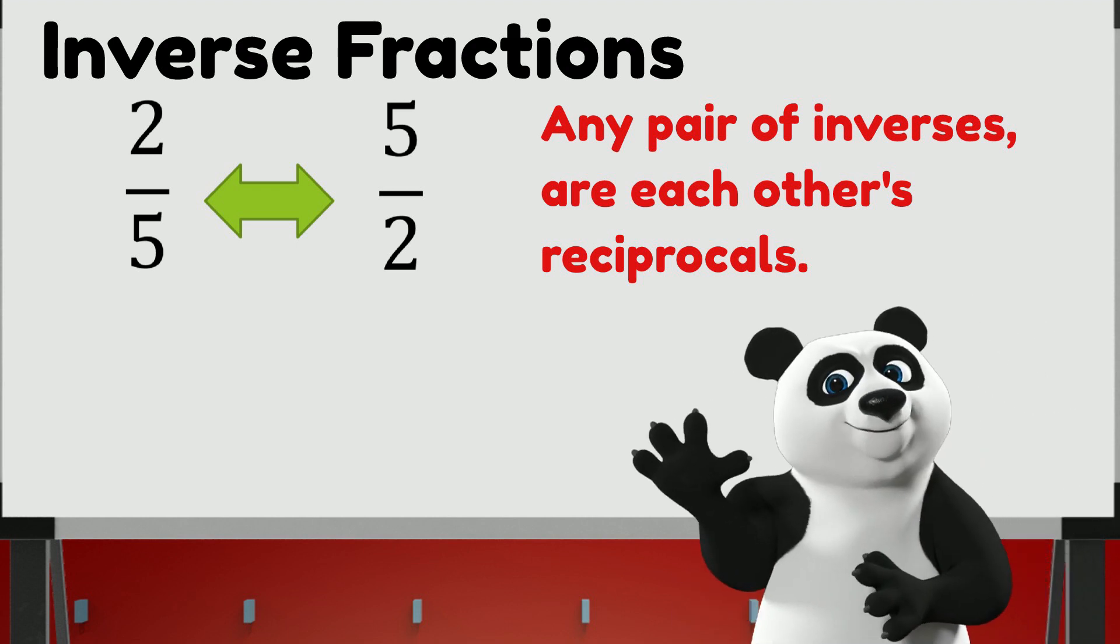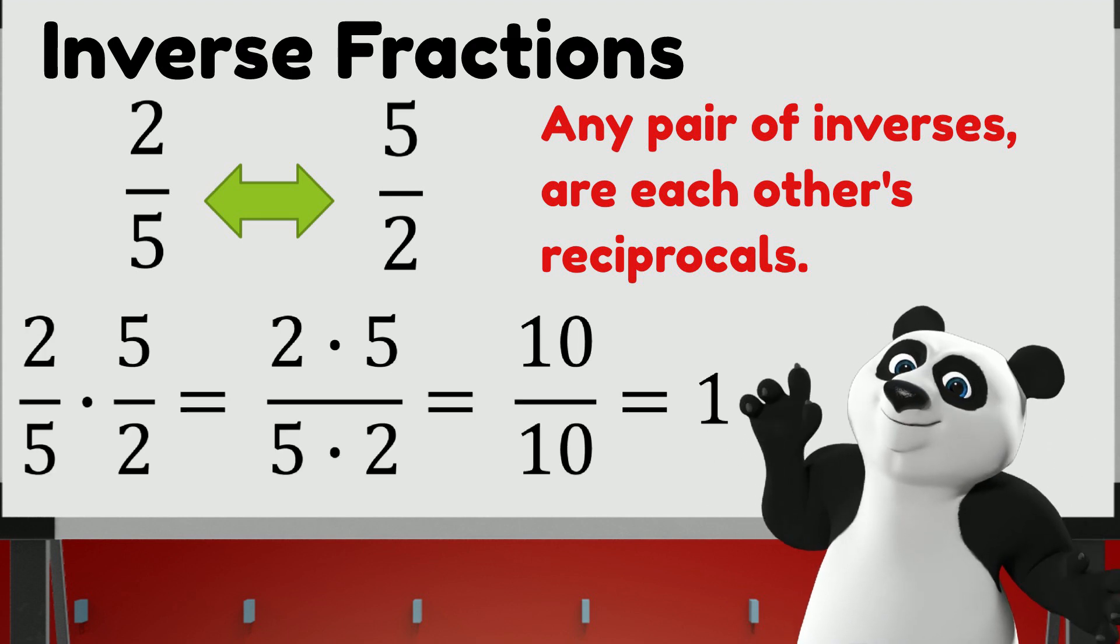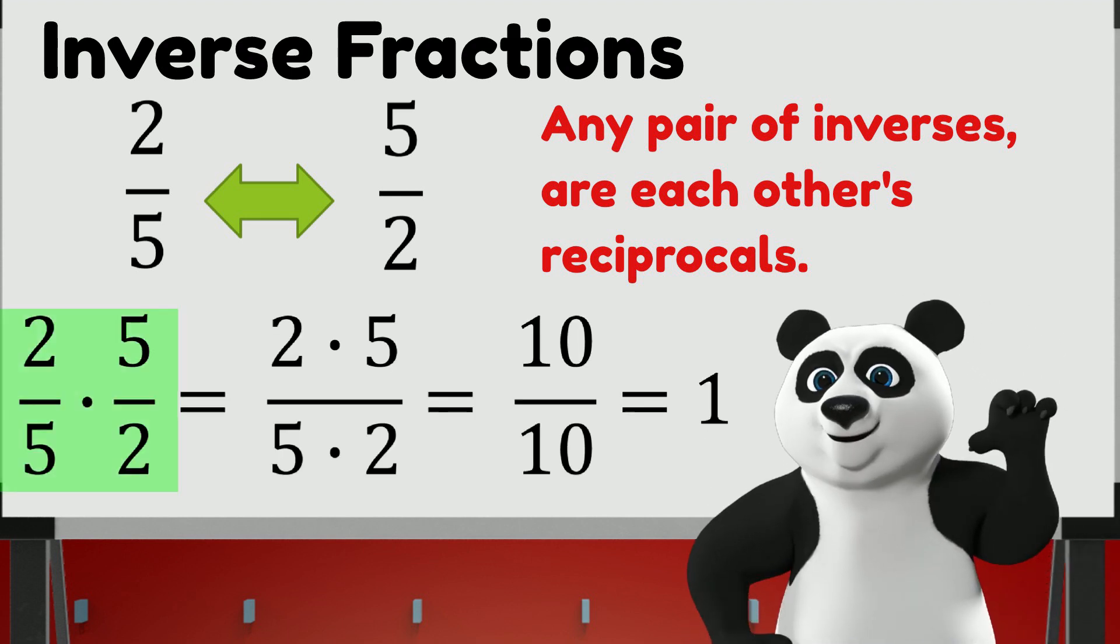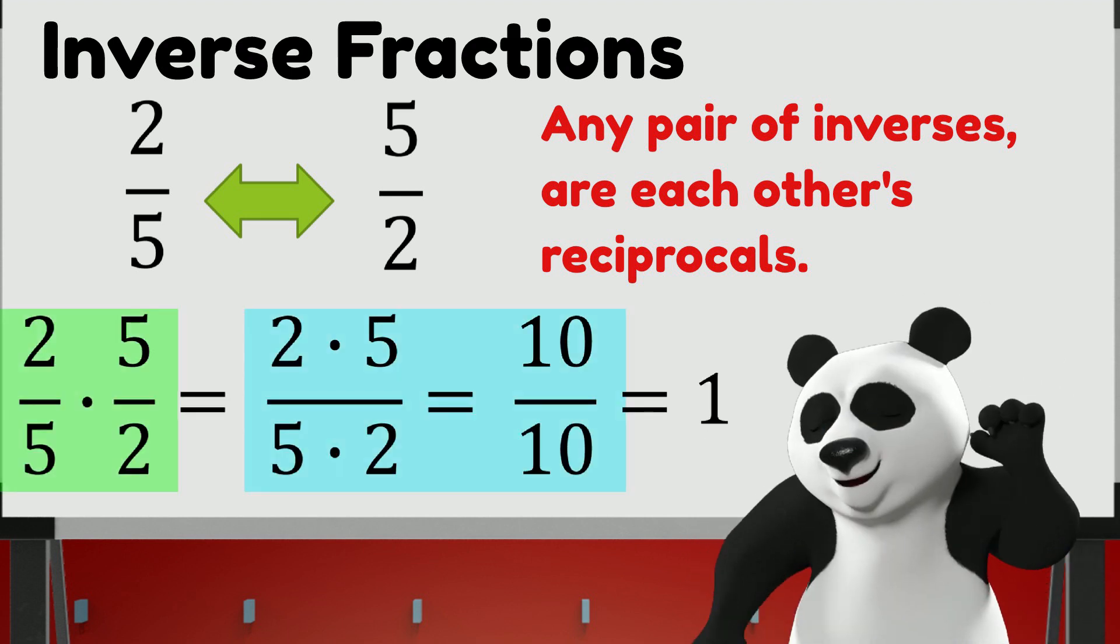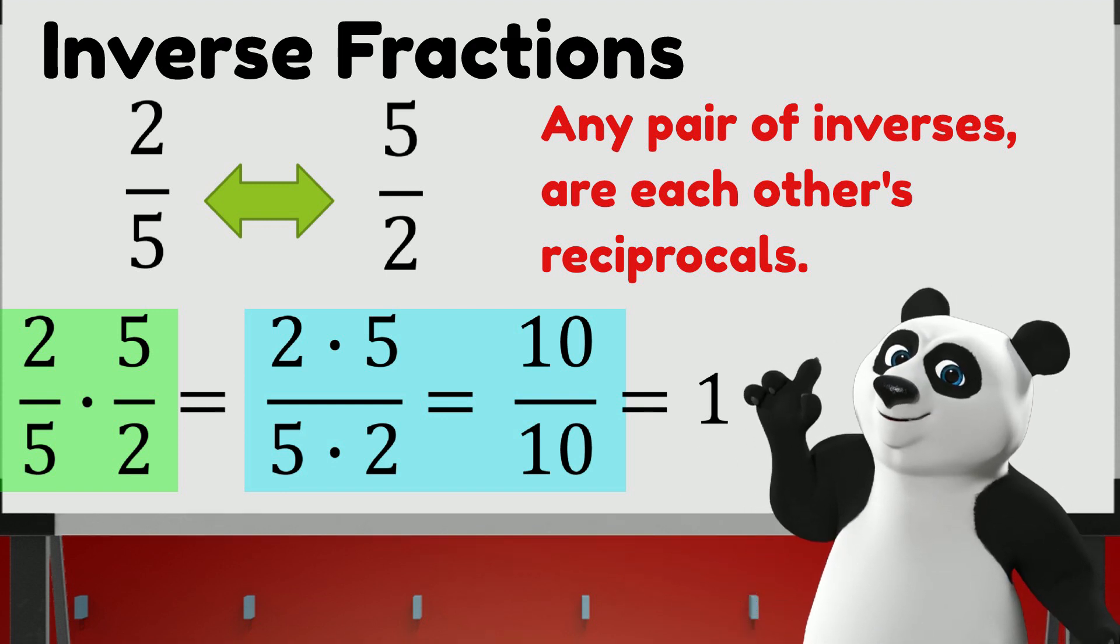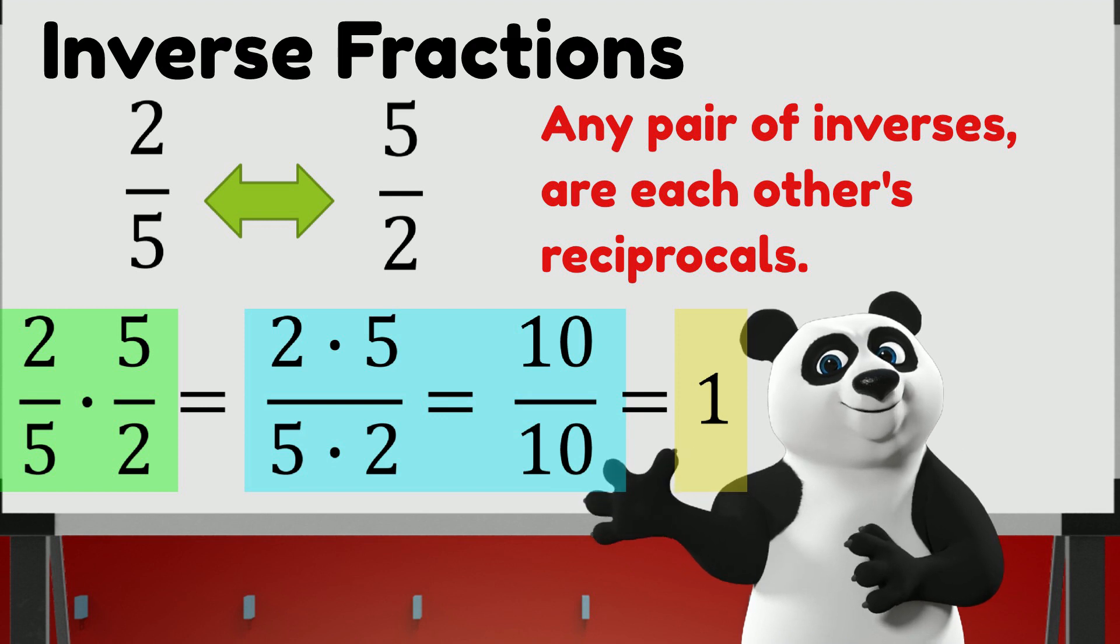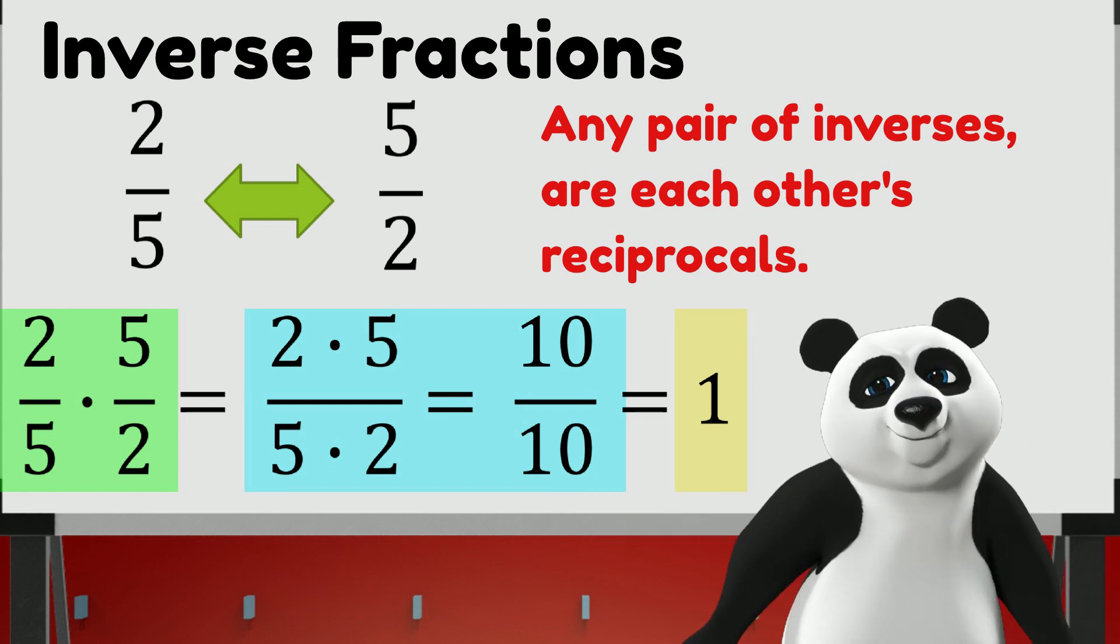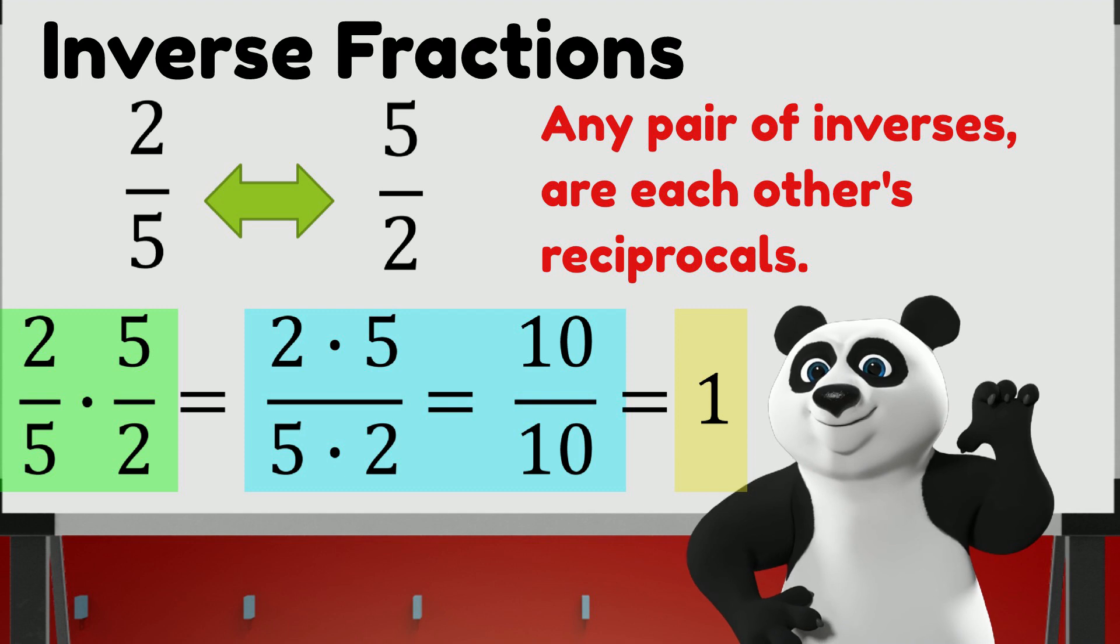Multiplying a pair of inverse fractions together, let's use our example. 2 fifths multiplied by its inverse, 5 halves, we get 10 over 10. The product's numerator and denominator are equal, and so we know the product is 1. This just proves the fact that a pair of inverse fractions are each other's reciprocals.